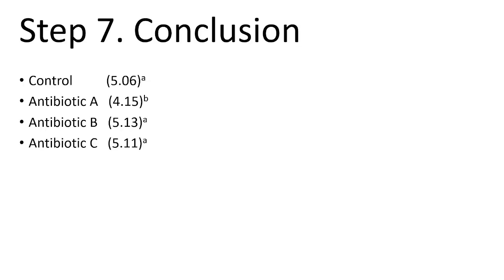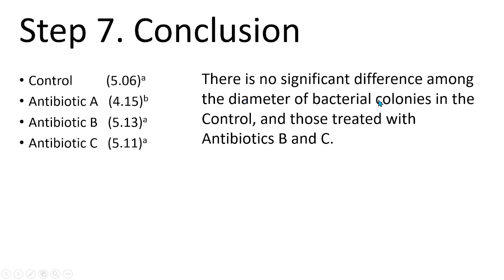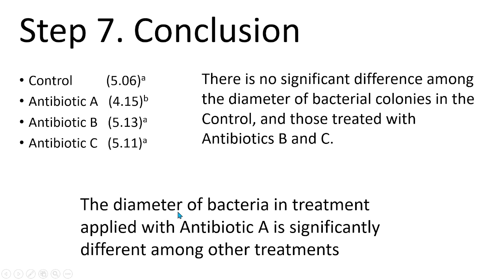Step 7, we are going to simplify the interpretation. For example, the control, antibiotic B and antibiotic C, they have similar superscript. So this means that there is no significant difference among the diameter of bacterial colonies in the control and those treated with antibiotics B and C. Now for antibiotic A, which has a superscript of B, we can say that the diameter of bacteria in treatment applied with antibiotic A is significantly different among other treatments.